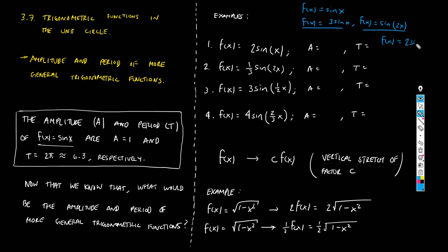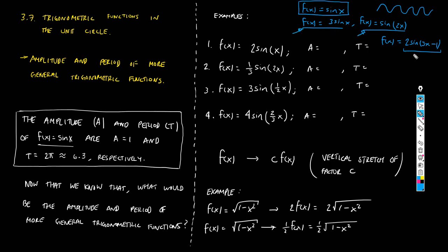What if I create something even more complex, like 2·sin(3x − 1)? It's still a trigonometric function and will still behave in the same undulating way, but it will be much more complex than the parent function. We want to investigate the amplitudes and periods of functions like this. I already know the amplitude and period of the primitive function, but what about these more complex types?